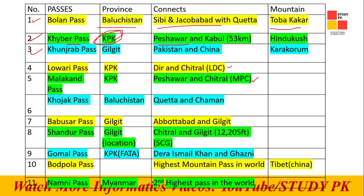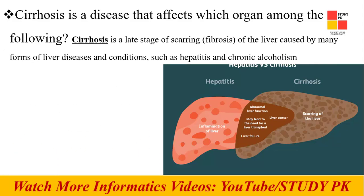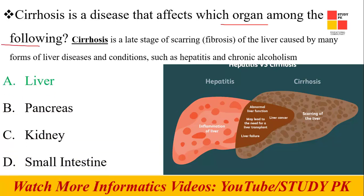Next question: Cirrhosis is a disease that affects which organ? The right answer is the Liver. Hepatitis and cirrhosis are related — both involve inflammation and scarring of the liver. So basically it is a liver disease.